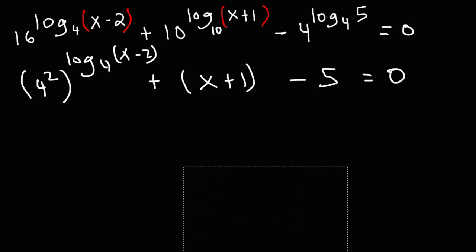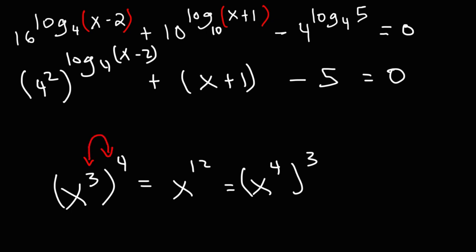Now, let's talk about that. x raised to the third power raised to the fourth power. What is that equal to? When you raise one exponent to another exponent, you need to multiply the two exponents. So this is equal to x to the 12. It's also equal to x to the fourth raised to the third, because 3 times 4 and 4 times 3, they're the same. But what I'm trying to help you see is that we could switch the 3 and 4.